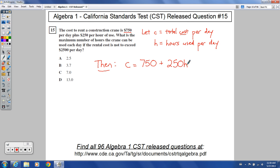We're saying if it's not to exceed $2,500 per day, that means the total cost at most can be $2,500. So $2,500 has to be greater than or equal to this other part.